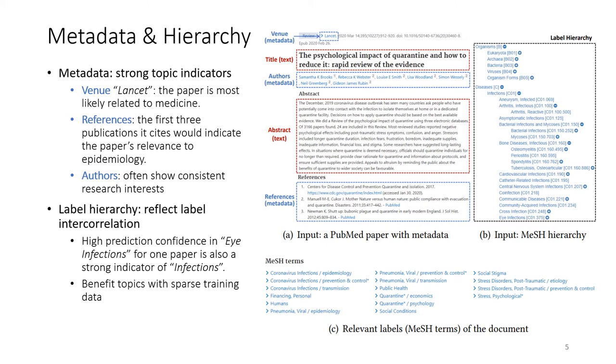So it is quite natural for us to think about using these two signals in text classification. We show another example here. It's a paper on PubMed, and we can see that here metadata serves as strong topic indicators. For example, the venue Lancet indicates the paper is most likely related to medicine. And if we look at references, the first three publications it cites would indicate the paper's relevance to epidemiology, which is more specific than the venue information.